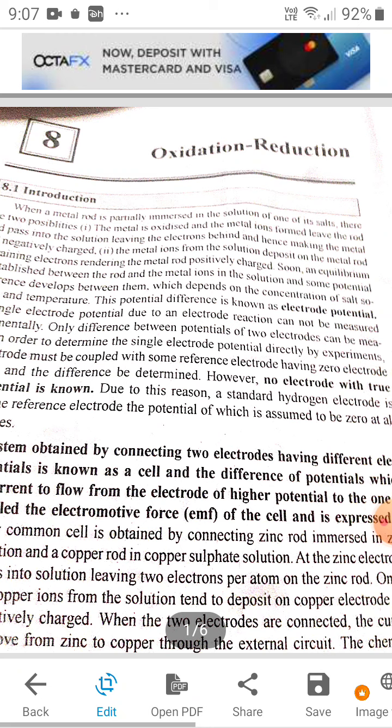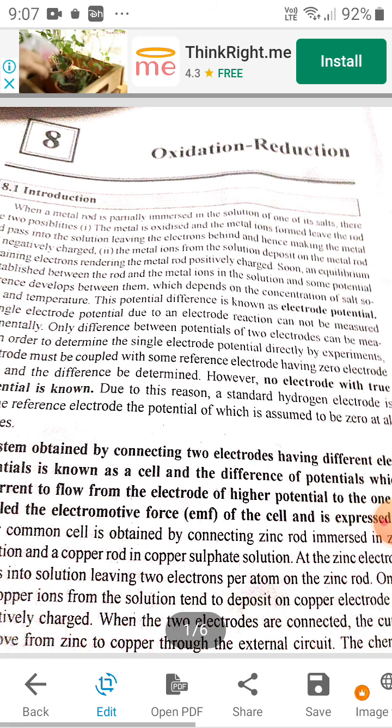two electrodes having different electrode potentials is known as a cell, and the difference of potentials which causes current to flow from the electrode of higher potential to lower potential is known as the electrode potential.